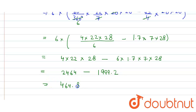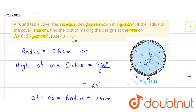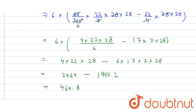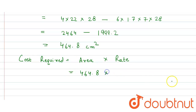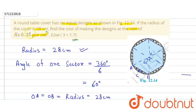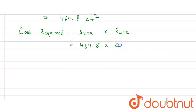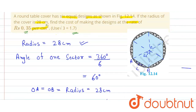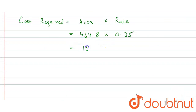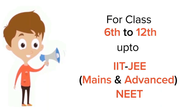Subtracting, we get 464.8 centimeters square. The required cost equals area times rate, which is 464.8 times 0.35, giving us rupees 162.68. That is our final answer.